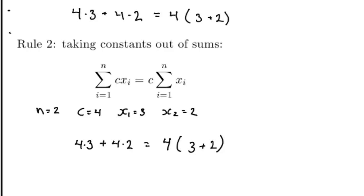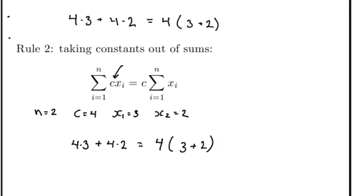So whenever you see a constant c, which does not have a subscript i, then it's the same number throughout the loop, and because of the distributive law, we can take it outside.